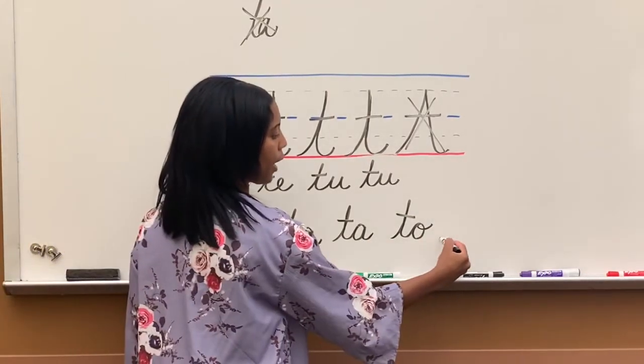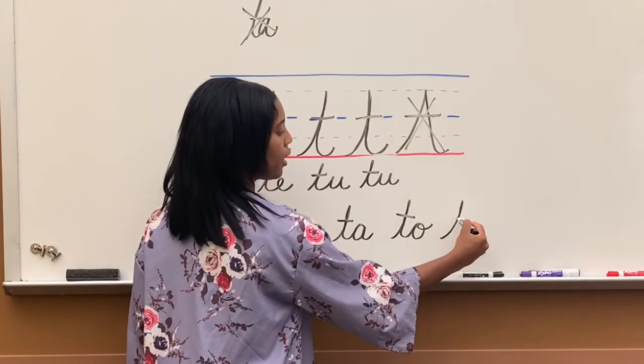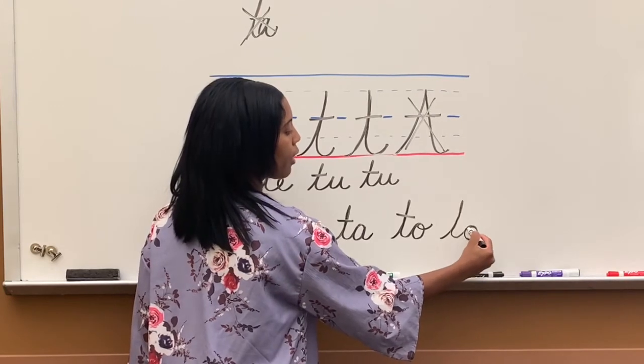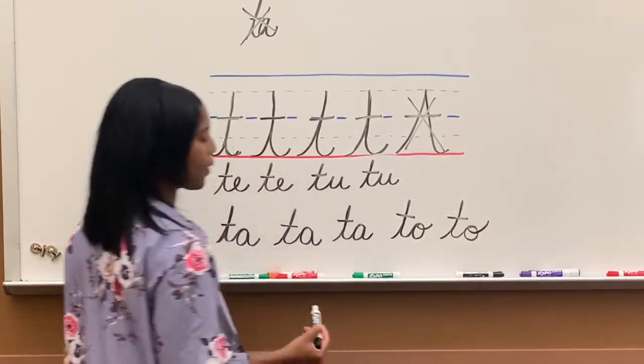Again, I go up to do the T, halfway to do O, and then I come back around, loop it out, and it's finished.